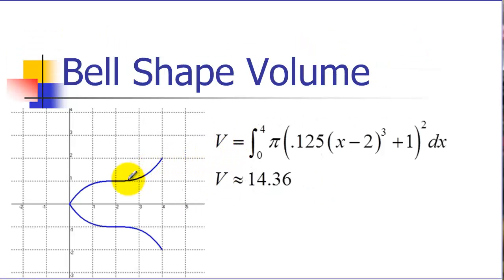If we go back to our bell problem and we wanted to find this, we were told that this curve went from zero to four, so those are going to be our integration limits. Then we've got pi, and then our f of x squared. We can use the graphing calculator to evaluate this definite integral. Our volume is 14.36, and whatever these units are, it would be units cubed, like cubic inches or cubic centimeters.